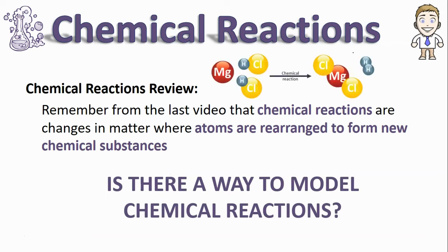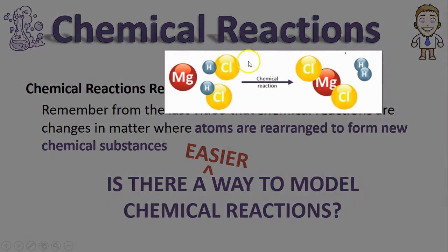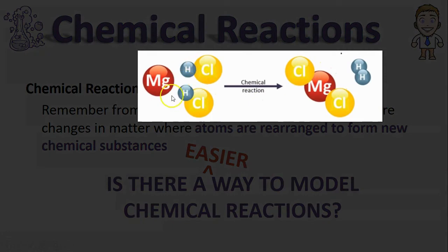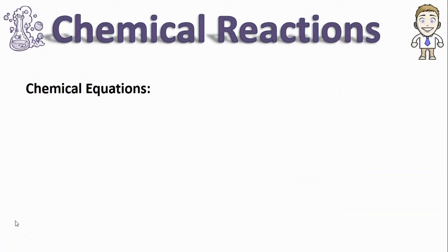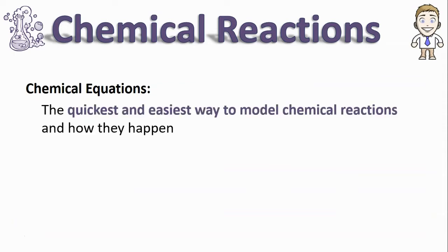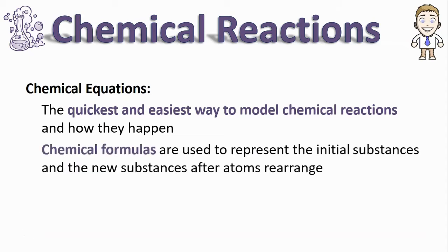Is there a way that's easier than drawing how each atom is attached at the beginning compared to how it's attached at the end? The answer to this question is, of course, the chemical equation. This is the quickest and easiest way to model chemical reactions and how they happen. What makes it so easy is that we use chemical formulas instead of drawing out each individual atom, and we use those to represent the initial substances and the new substances after the atoms rearrange.